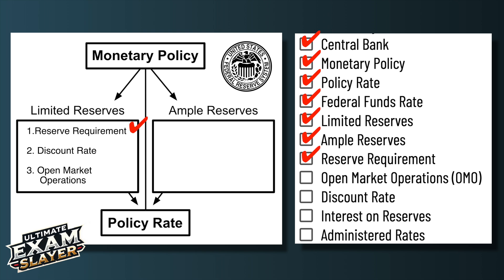The first traditional tool is the reserve requirement, which is how much banks have to hold by law. The second is the discount rate, which is the rate the central bank charges commercial banks. And the third one's the most important — it's open market operations, when the central bank buys or sells bonds. Those are the three traditional methods of monetary policy.